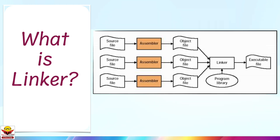When you write code in embedded C, each .c file is compiled into a separate object file — like mini building blocks. The linker takes all these pieces, resolves all the references, arranges your code and variables into the right memory addresses, and builds one complete executable program.